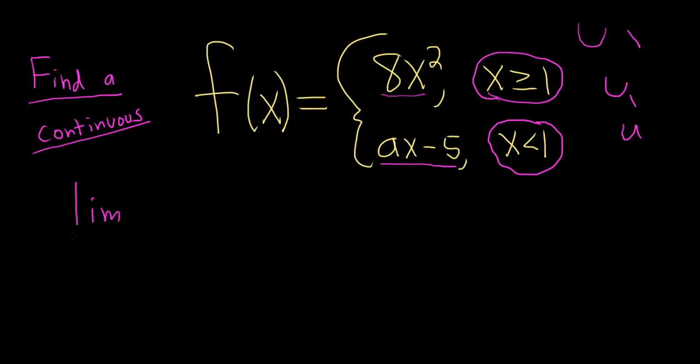Let's start by taking the limit from the left. So if we take the limit from the left, we're going to use the bottom piece, because that means x is less than 1. So I'll go ahead and put the f of x here. And so because we're approaching from the left, just to show an extra step,